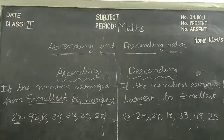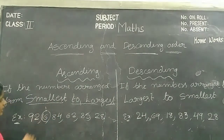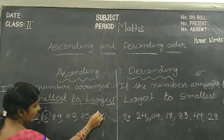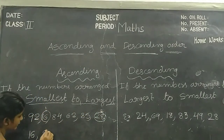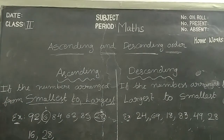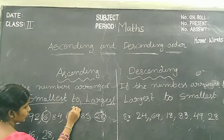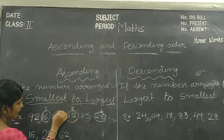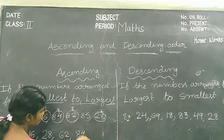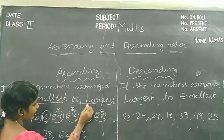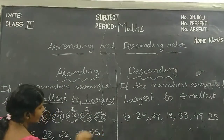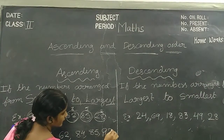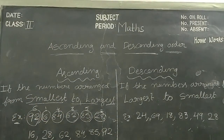In this example, what is the smallest number, children? 16. What is the smallest number? 16. Next number is 28. Next number is 62. Next number is 84. Next number is 85. Next number is 92.